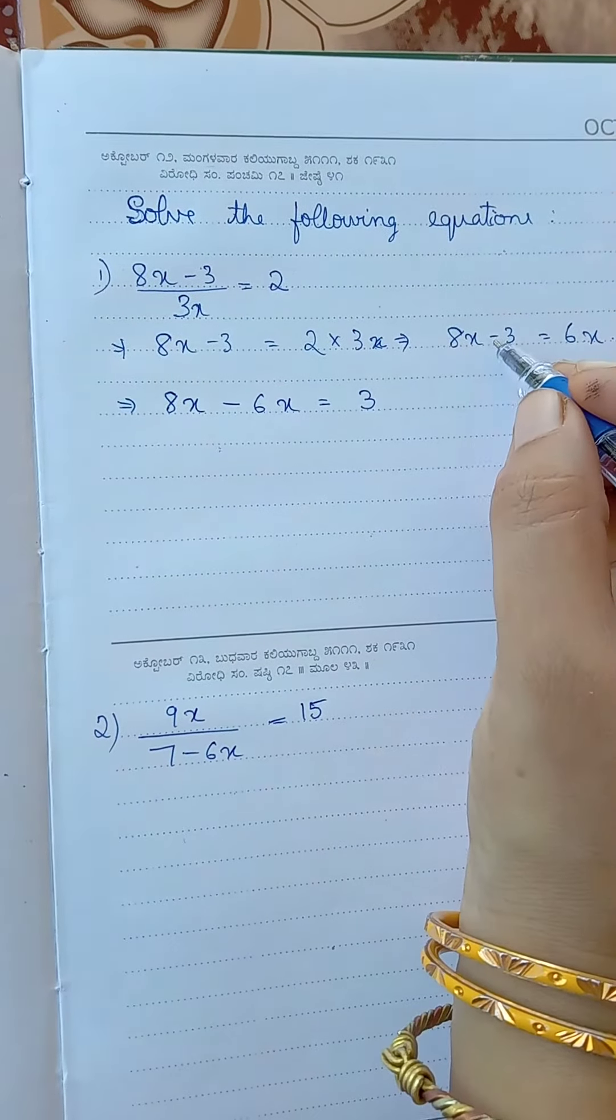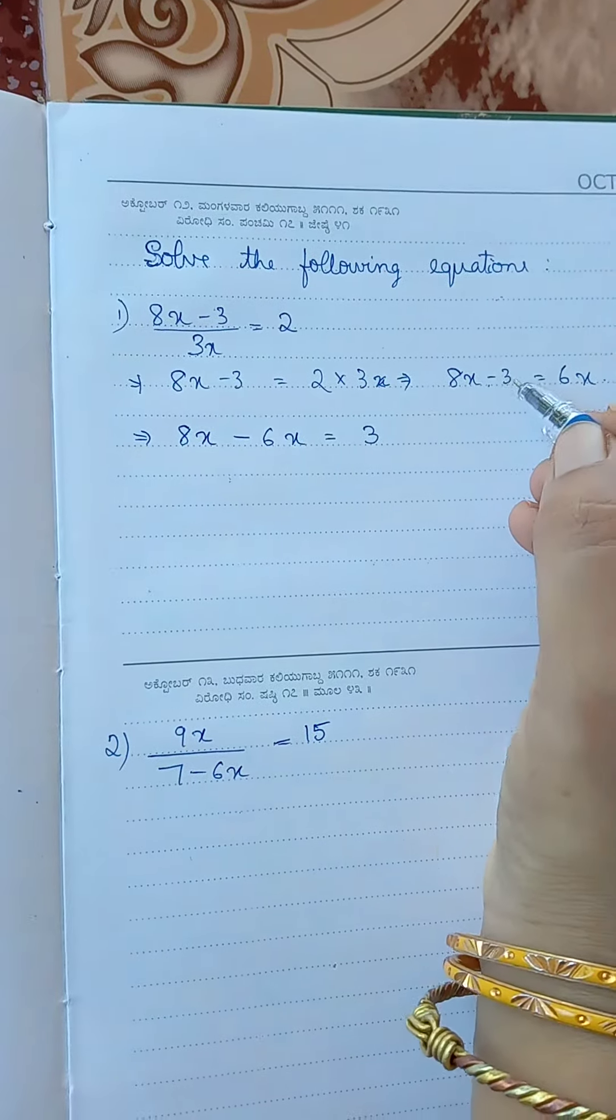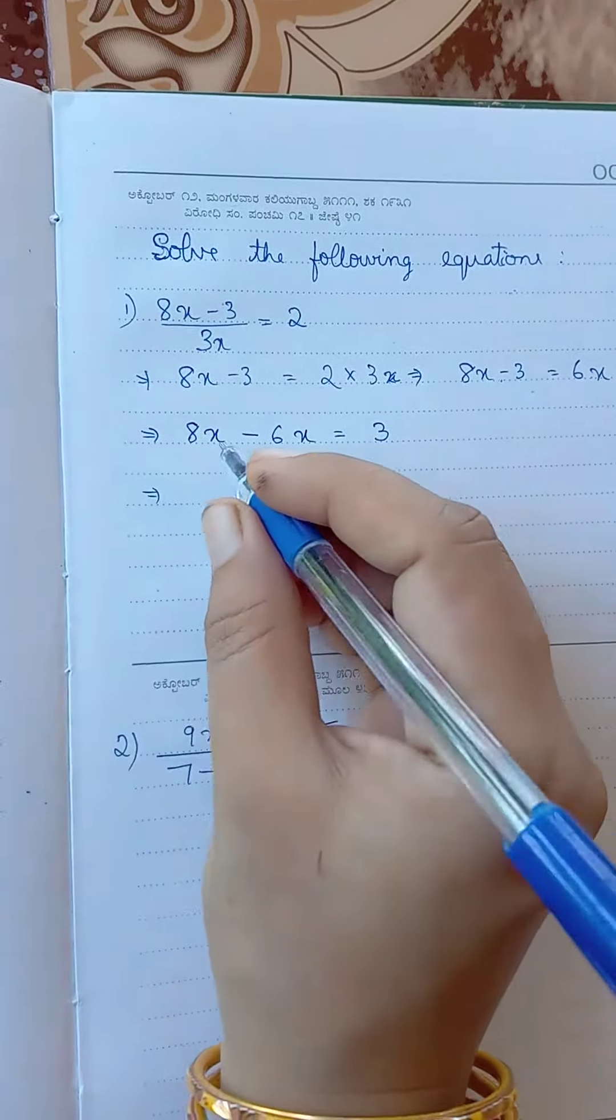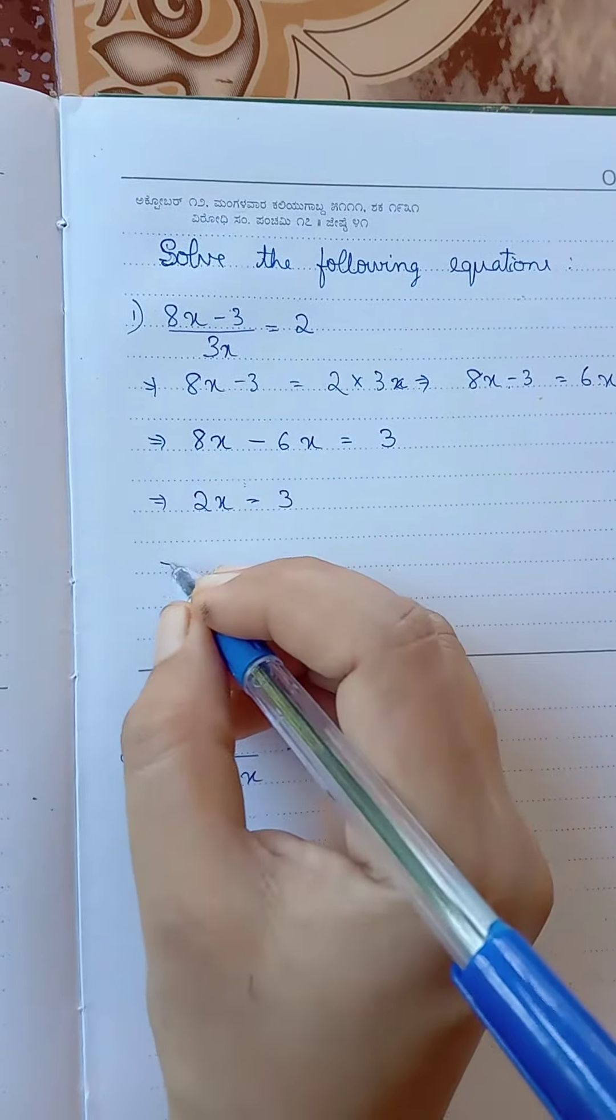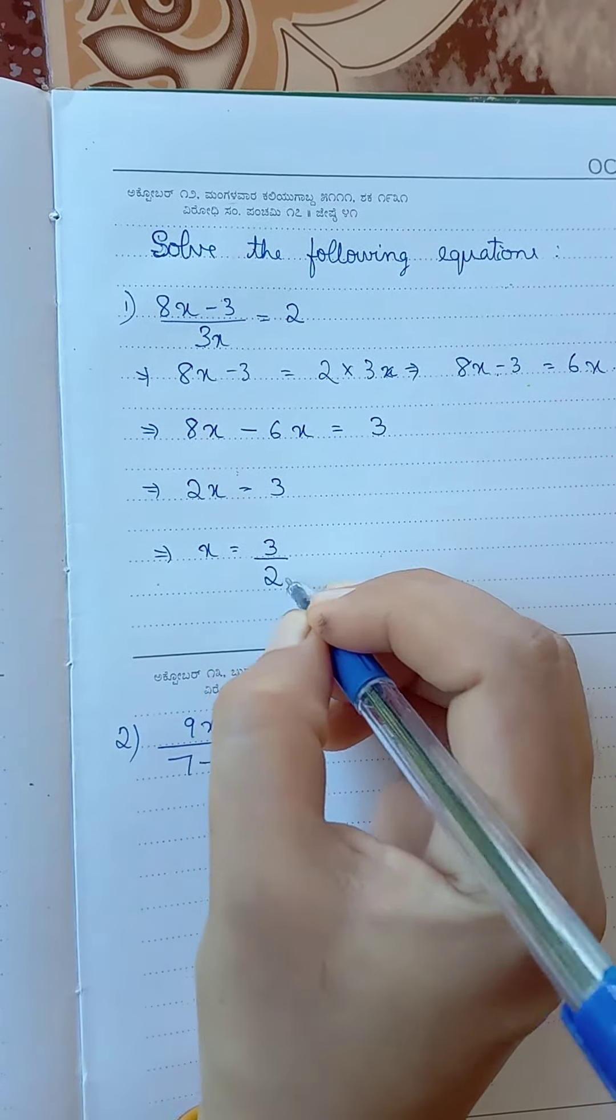6x becomes minus 6x when we move to LHS, and minus 3 becomes plus 3 when we move to RHS. So 8x minus 6x is 2x equal to 3, which implies x equal to 3 divided by 2.